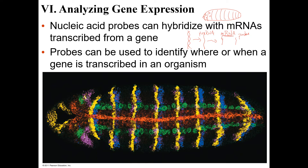So if the mRNA code reads A, C, C, U, then the probe would read U, G, G, A — and they would match each other. They're matching, meaning they go together. That's what hybridized means — can they stick together? A probe is the piece of DNA or RNA that actually sticks to the gene or the RNA of interest.